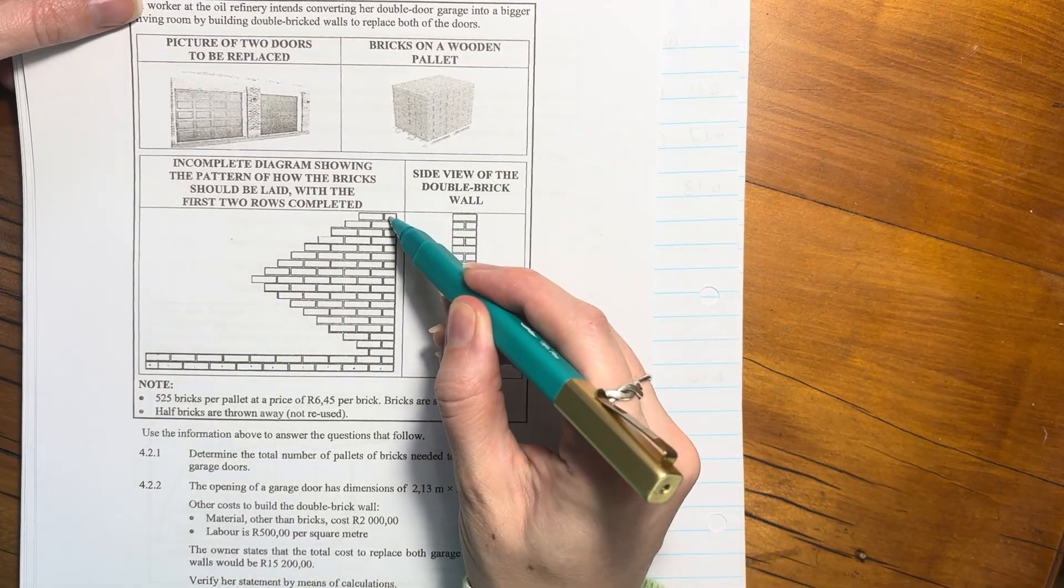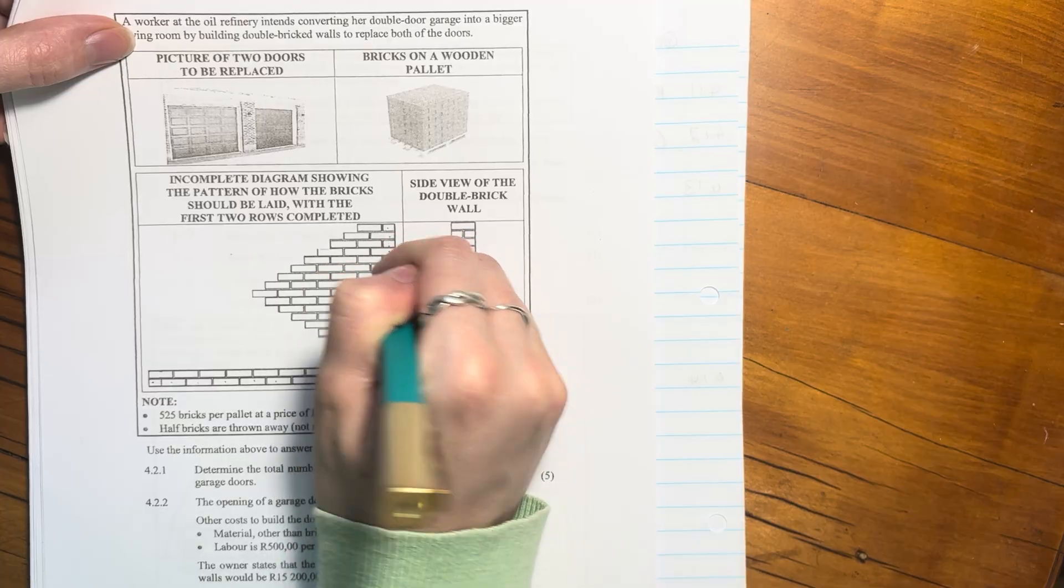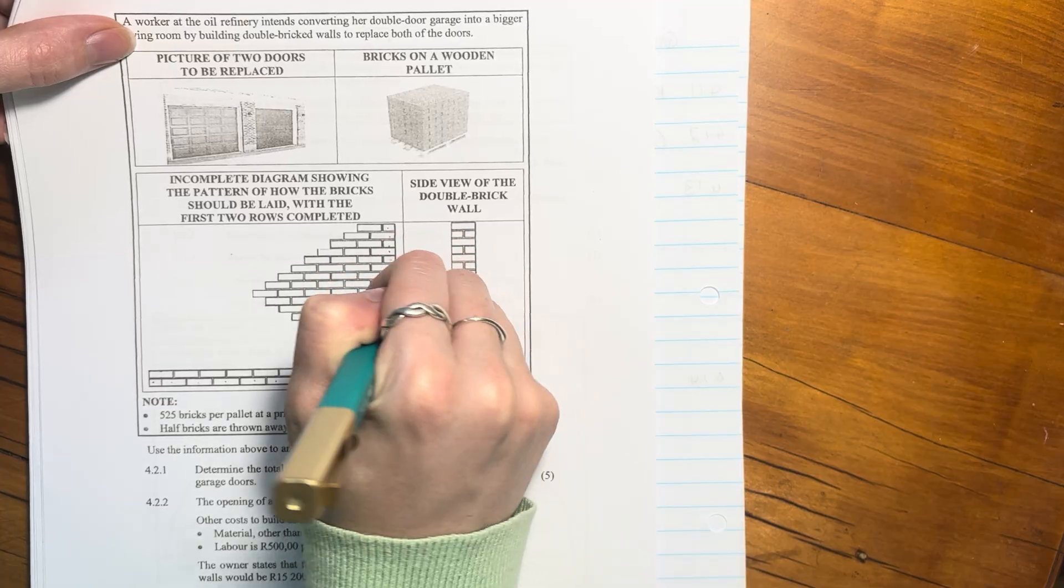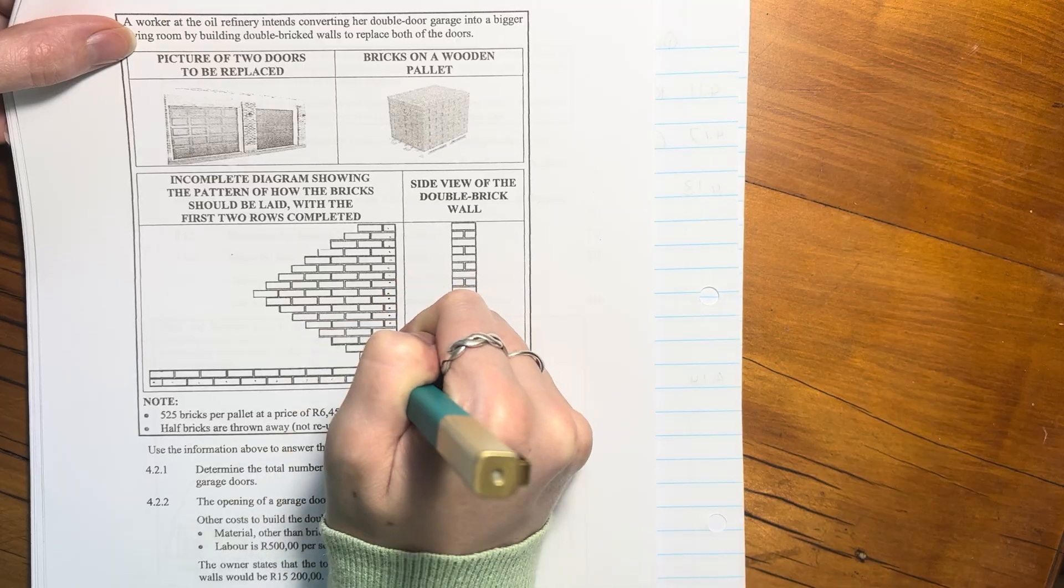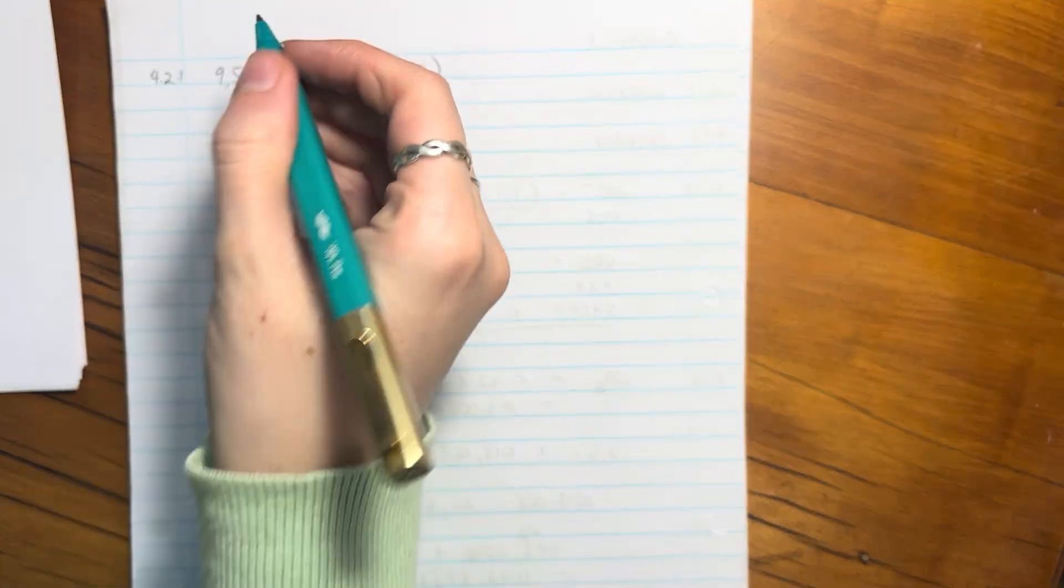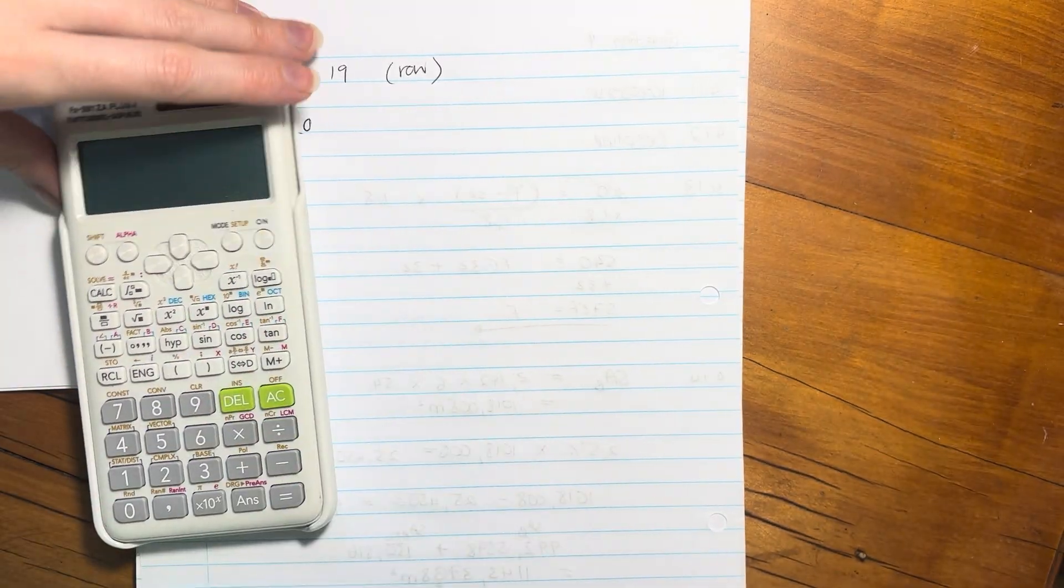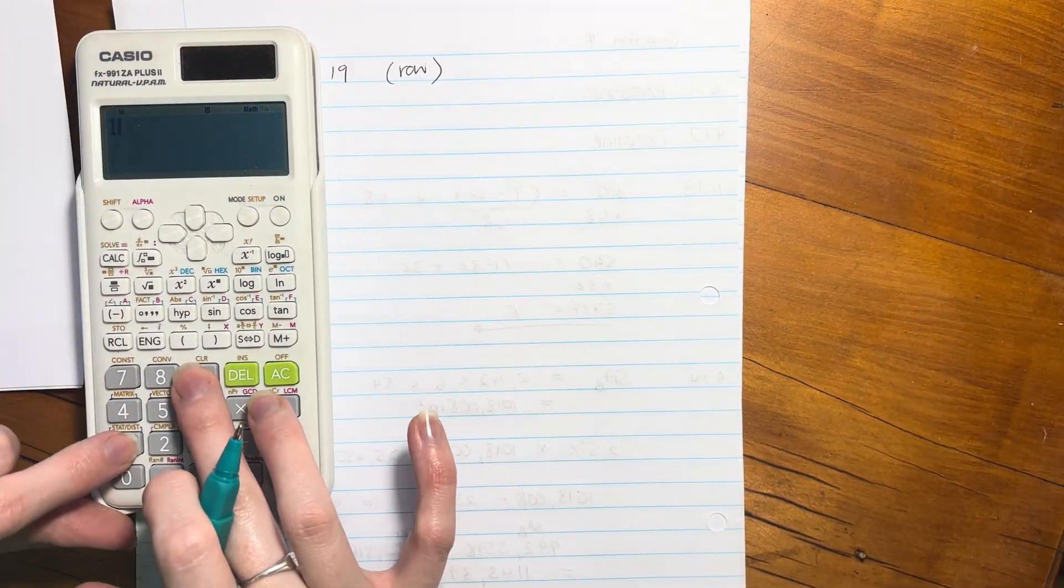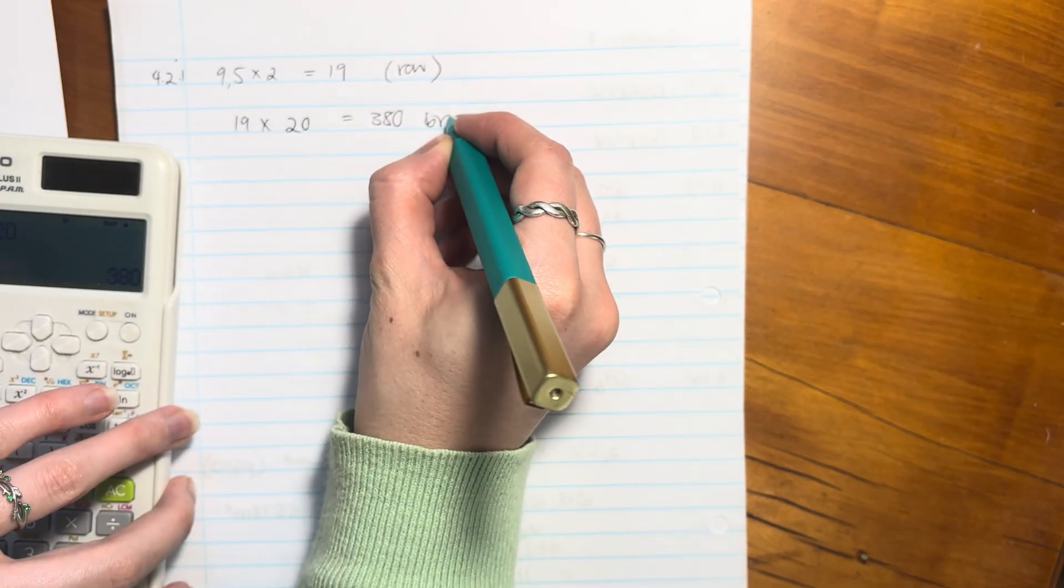So let's count how many rows, one, two, three, four, five, six, seven, eight, nine, ten, eleven, twelve, thirteen, fourteen, fifteen, sixteen, seventeen, eighteen, nineteen, twenty. We then need to say 19 times 20, so that's how much we're going to need for one wall. For one wall we're going to need 380 bricks.